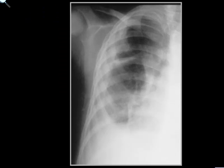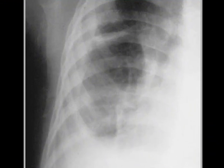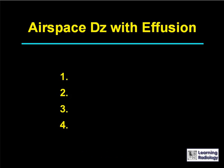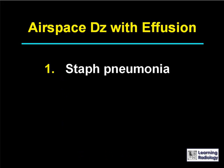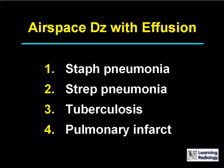Here's the next differential. The differential is airspace disease with effusion. There are four causes. The four causes of airspace disease with pleural effusion are staphylococcal pneumonia, streptococcal pneumonia, tuberculosis, and pulmonary infarct.